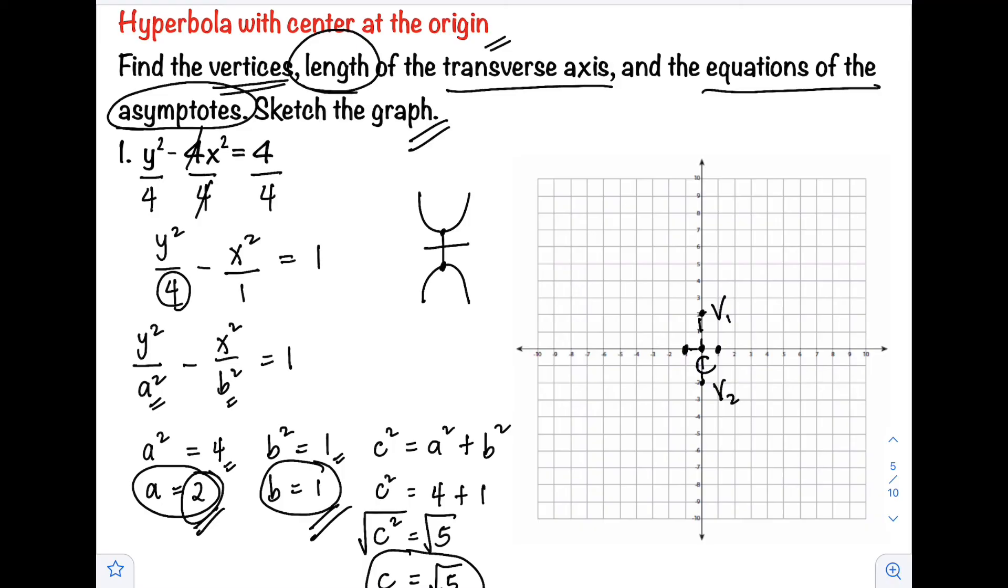Next, make an imaginary rectangle by connecting the endpoints of the conjugate and transverse axes. Once you have the rectangle, connect the two corners diagonally. These are now our asymptotes. Connect them so we have two asymptotes.